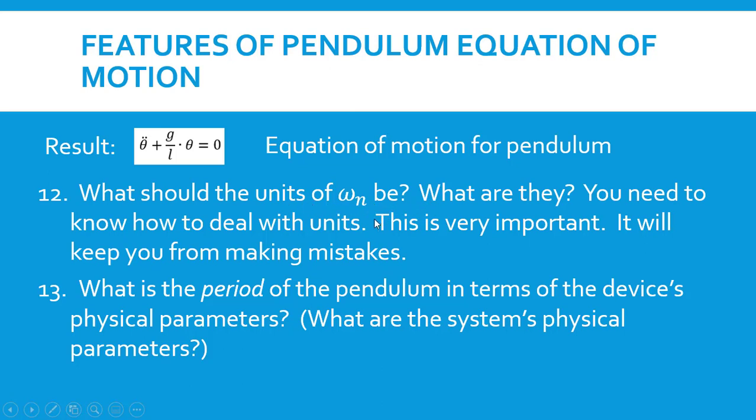What should the units of omega_N be? What are they? You need to be able to figure this out because this is a good check on your calculations. It keeps you from making mistakes. The other thing that's related to the natural frequency of the system is the period of the pendulum. So, what is the period of the pendulum in terms of the device's physical parameters?